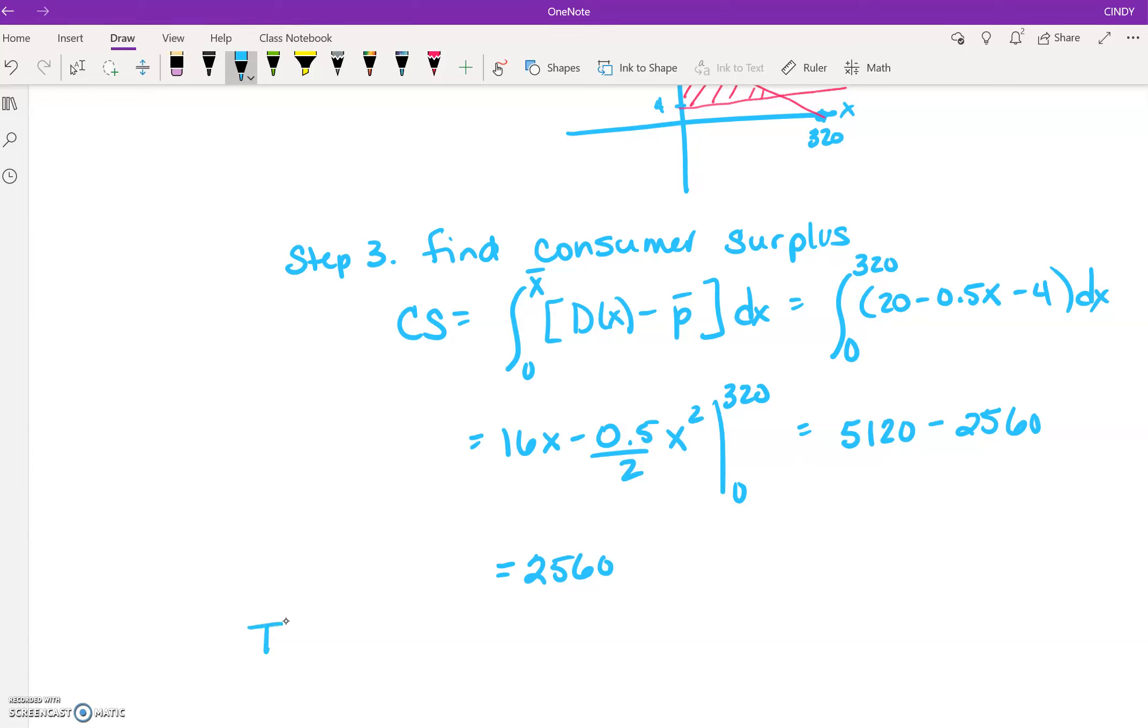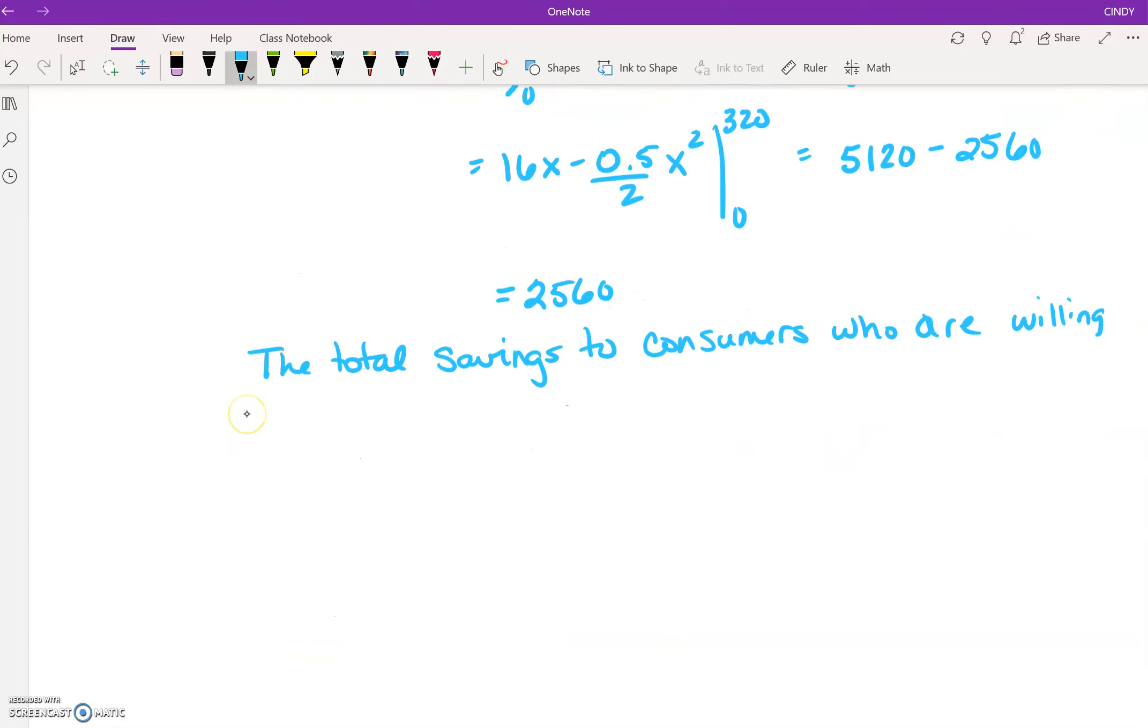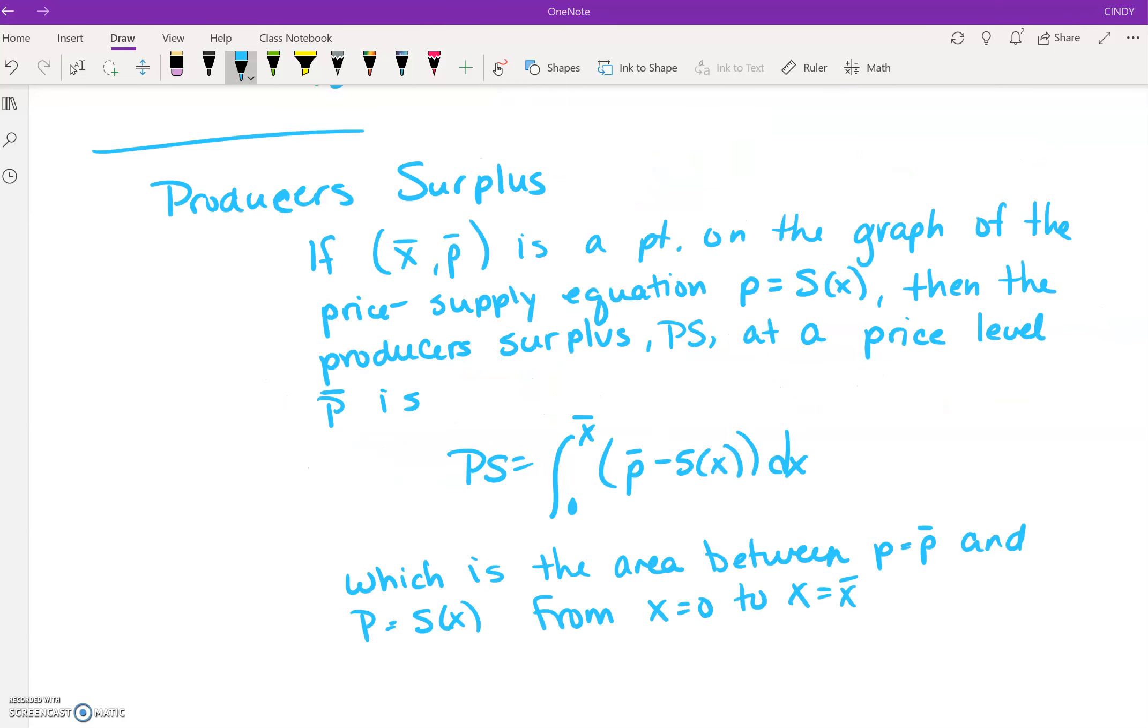So that basically says the total savings to consumers who are willing to pay a higher price for the product is $2,560. I went ahead and pre-wrote this because I have time.